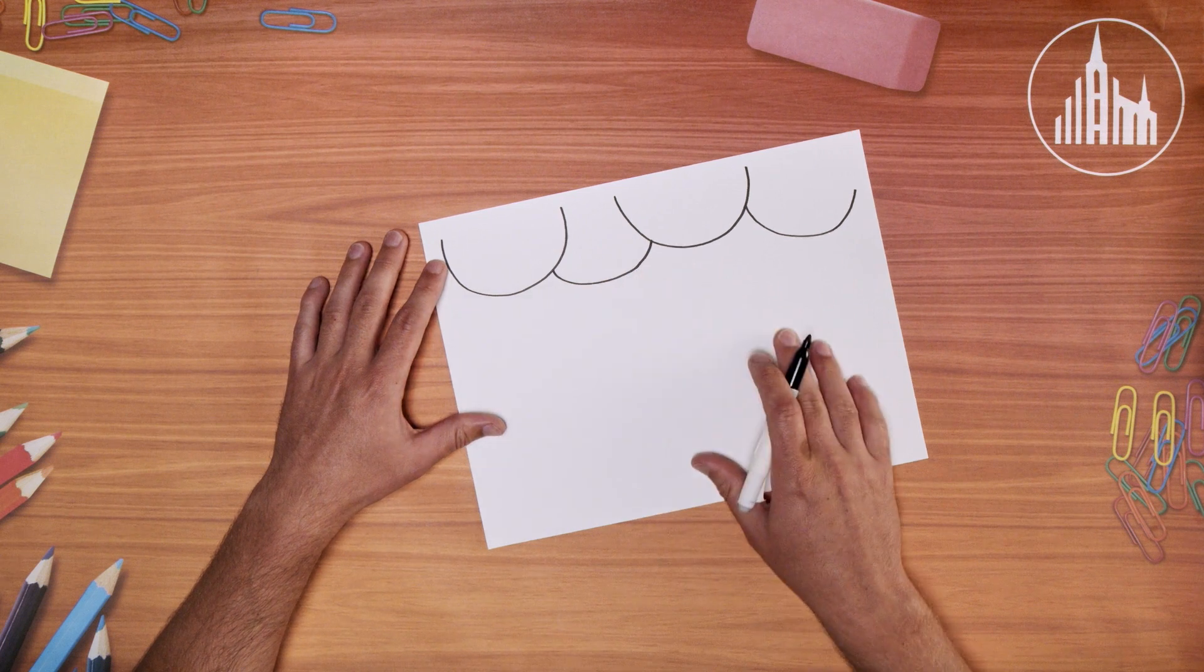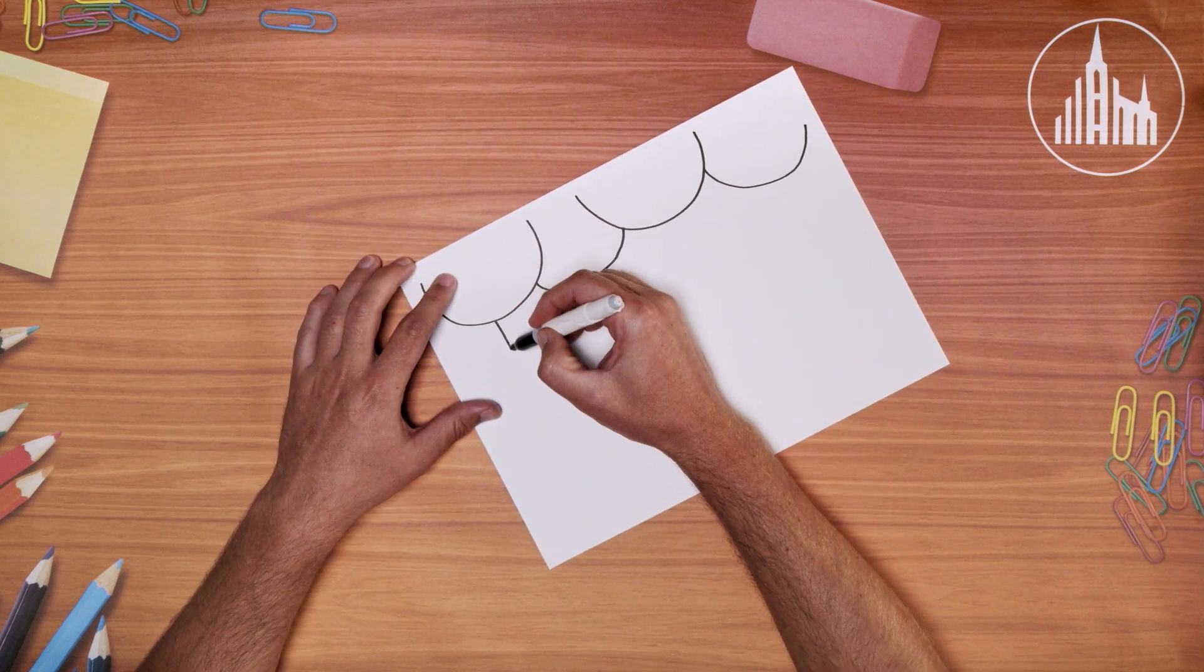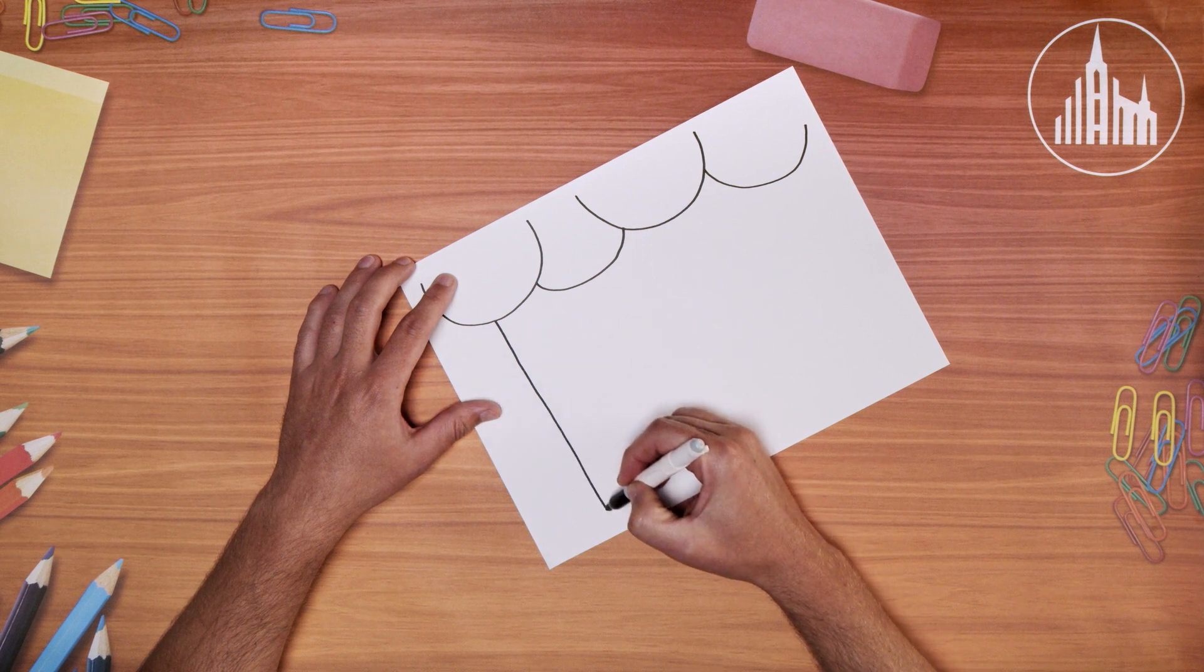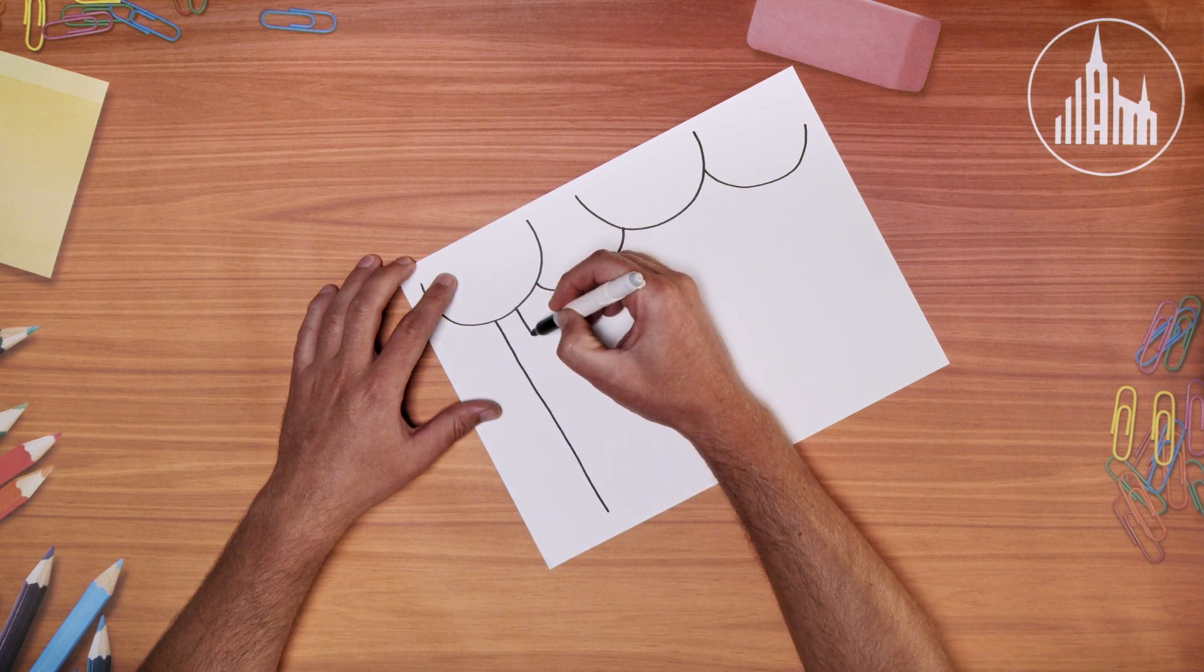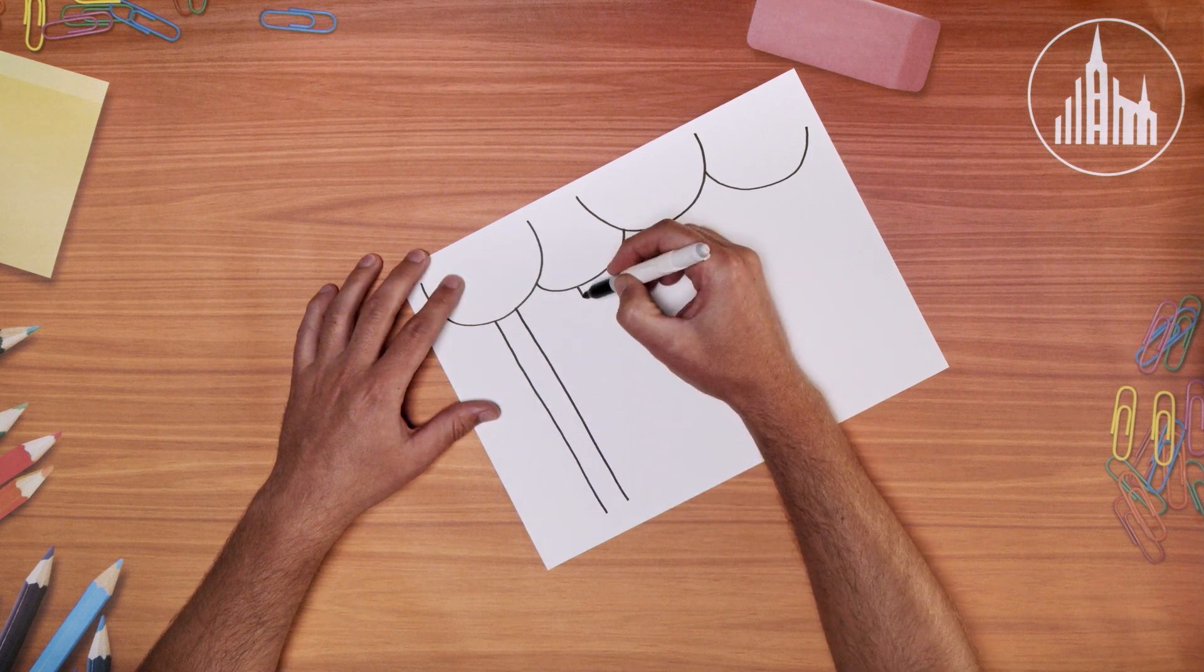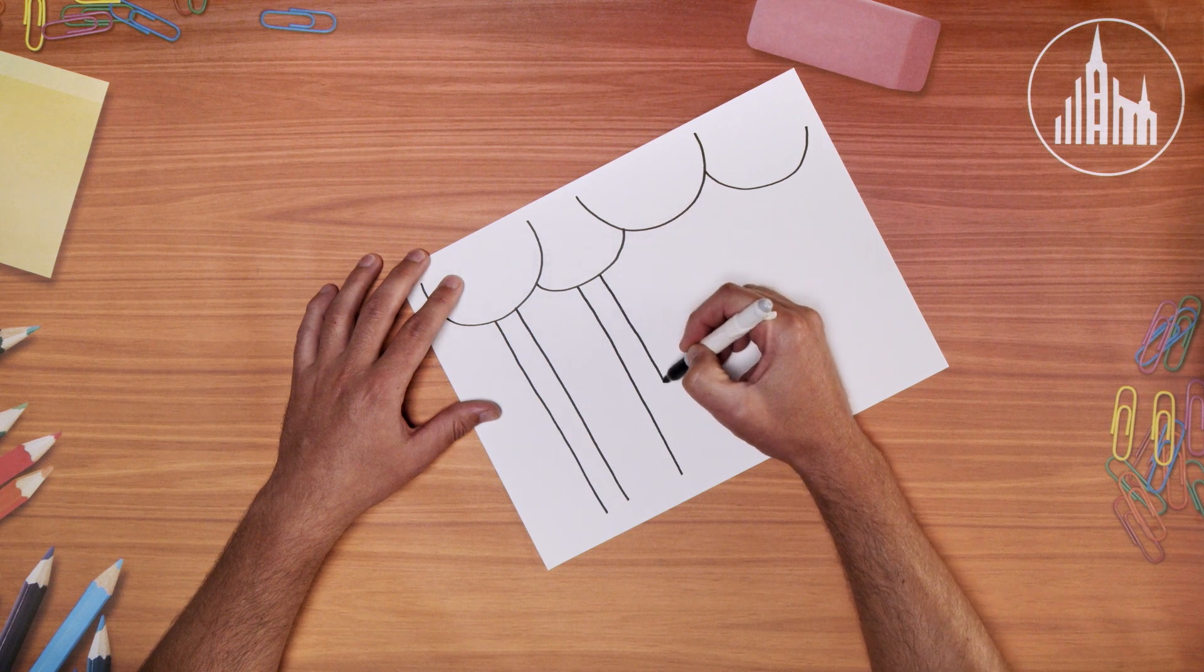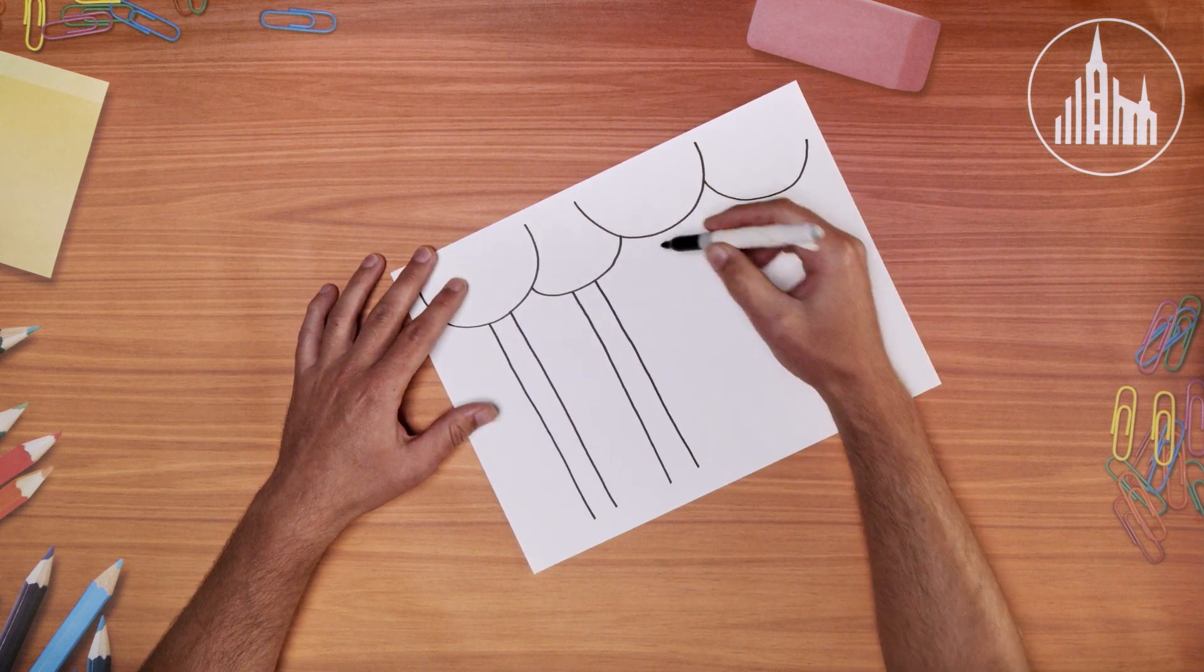And now we're going to add some trunks to these trees. So we want to take some lines from the trees and go all the way down, close to the end of the paper. And they don't have to be all the same size. Trunks can even bend and change different directions on trees. I'm sure you see that all the time.